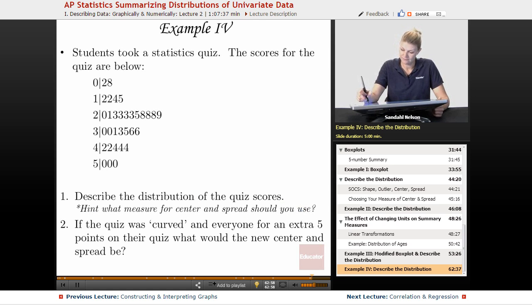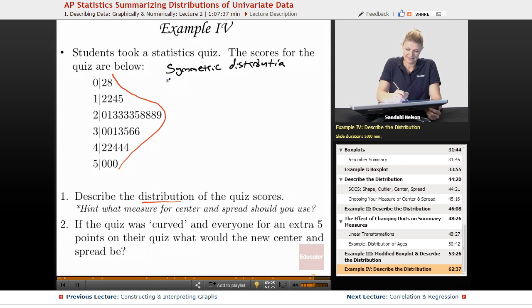If we look at this, we look at it as a graph, kind of turn it, we see this is really nicely symmetric and it doesn't look like it has an outlier. I don't need to do the math on this to know that it doesn't have an outlier. So if I'm describing the distribution, I'm going to say we have a symmetric distribution. I'm going to say that it's no outliers.